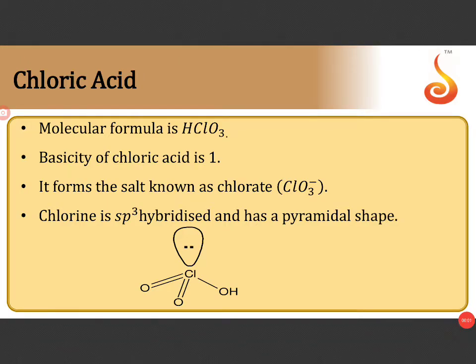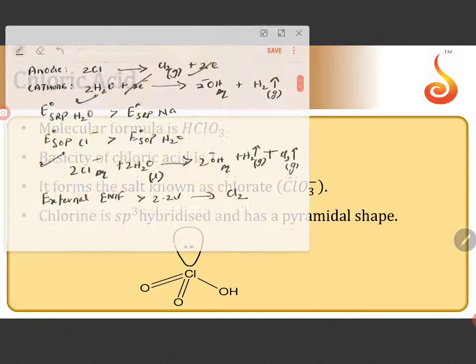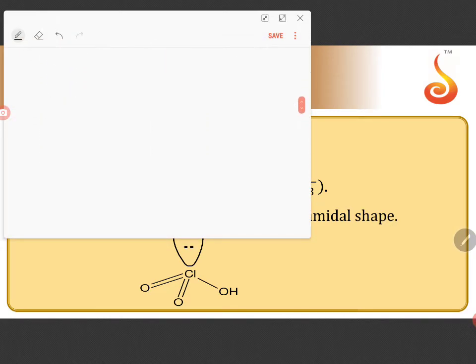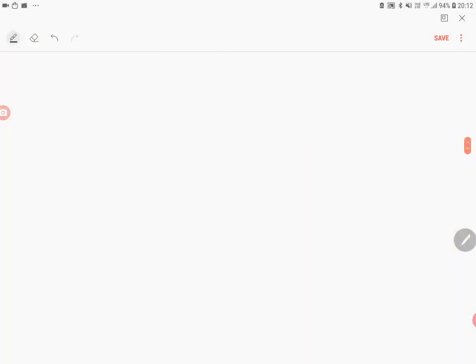Chloric acid has the formula HClO₃. The basicity of chloric acid is one because it contains only one replaceable hydrogen. Its salt is chlorate (ClO₃⁻). It has a pyramidal shape and sp³ hybridization. Now let us look at how we perform this hybridization — this is very important.